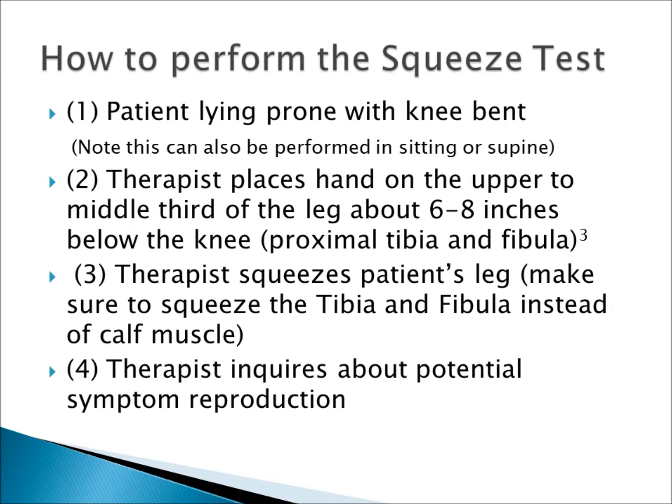The squeeze test is performed as follows. The patient lies prone with their knee bent — note that this can also be performed in sitting or supine. The therapist then places their hand on the upper to middle third of the leg, about 6 to 8 inches below the knee, and squeezes the patient's leg, making sure to squeeze the tibia and fibula instead of the calf muscle. The therapist then inquires about potential symptom reproduction.